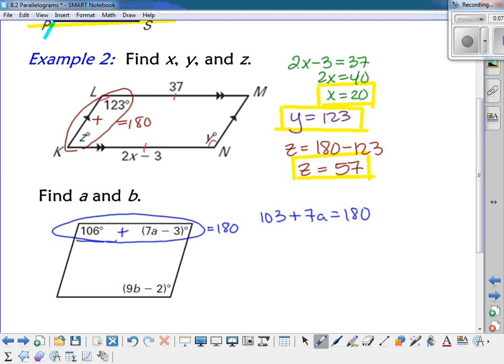And then if we subtract 103 from both sides, 7a would equal 77. So when we divide by 7, we get that a is equal to 11.